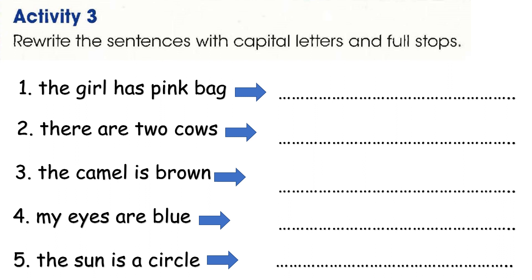Number 1: The girl has a pink bag. Number 2: There are two cows. Number 3: The camel is brown. Number 4: My eyes are blue.